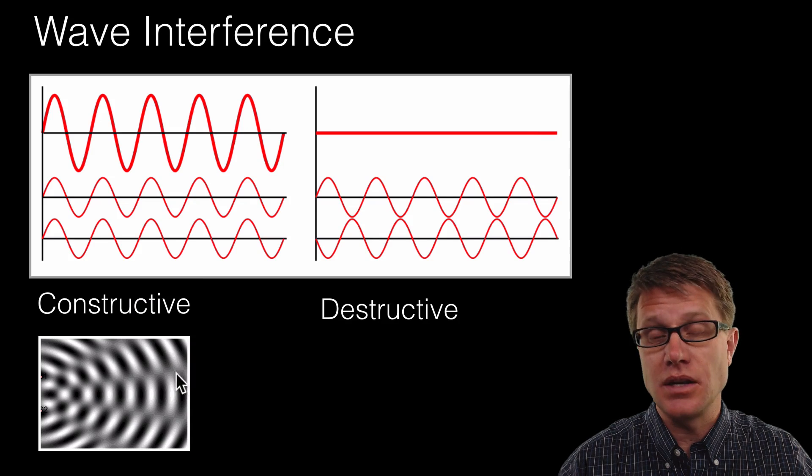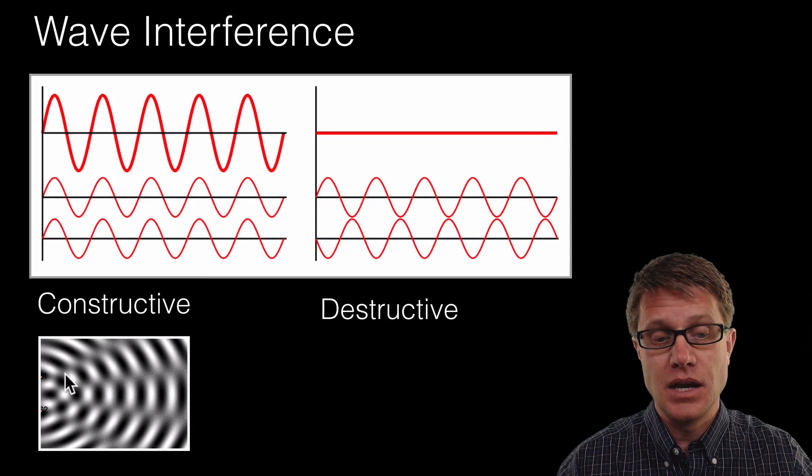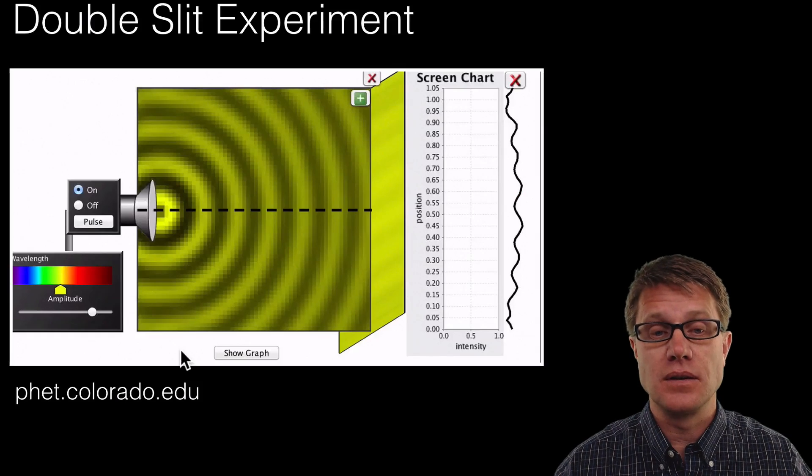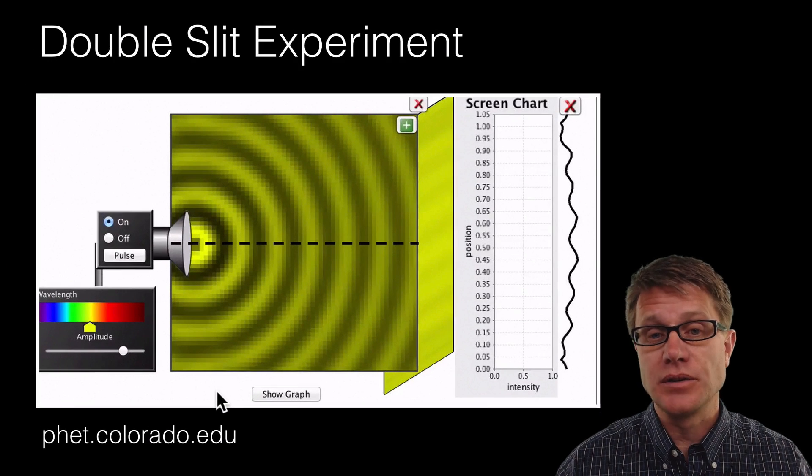So you could see these areas right here are going to be where we have that destructive interference. And then we are going to have constructive interference in the middle. And so this is the double slit experiment.